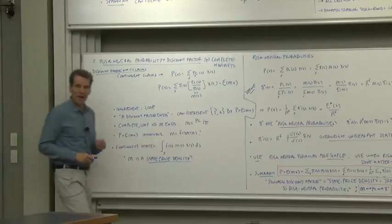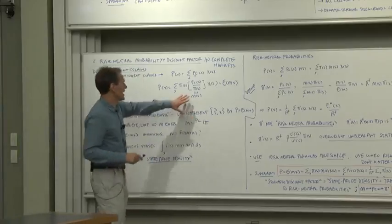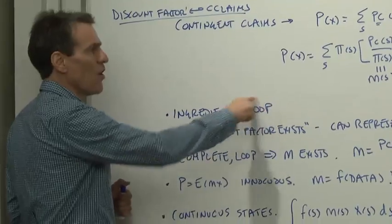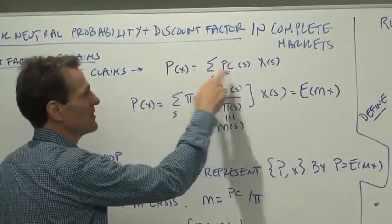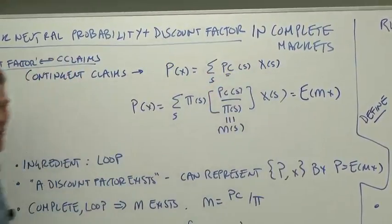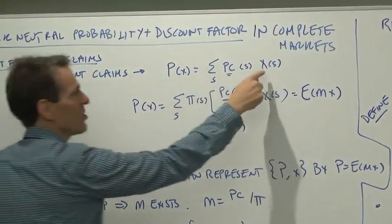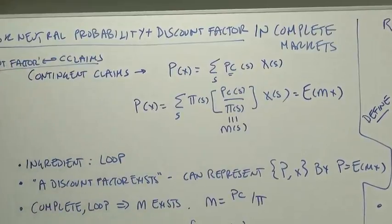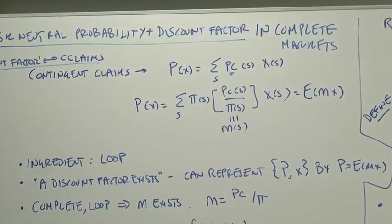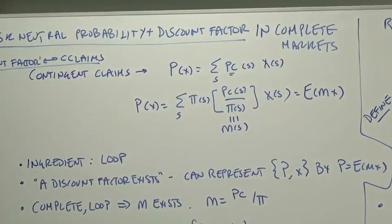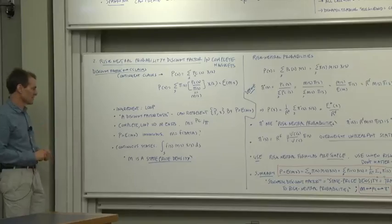Now how much did we have to do? What ingredient did we need to do that? It's called the law of one price, the statement that the price of a bundle is equal to the a la carte menu, how much it costs if you buy each element as a contingent claim. That is an assumption, and it reflects an absence of arbitrage, a little bit of rationality by our investors.